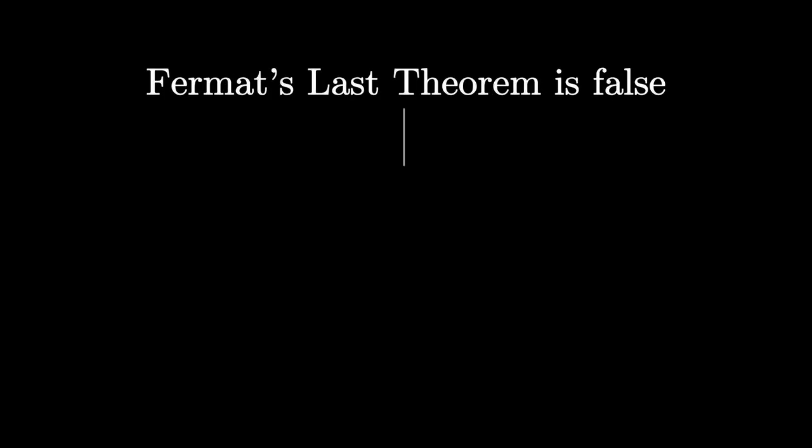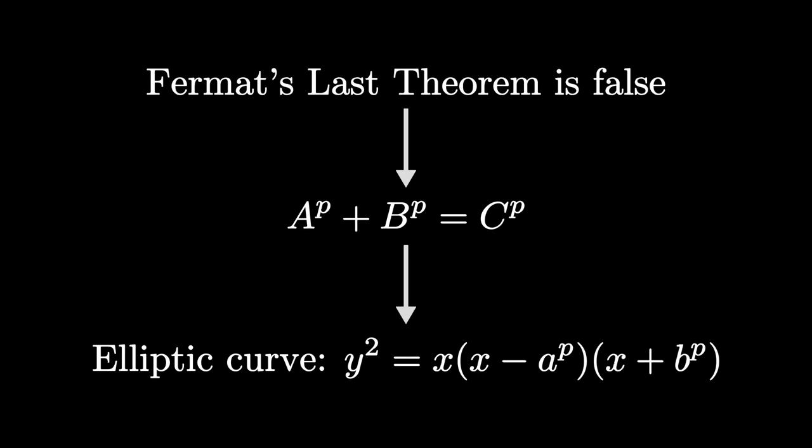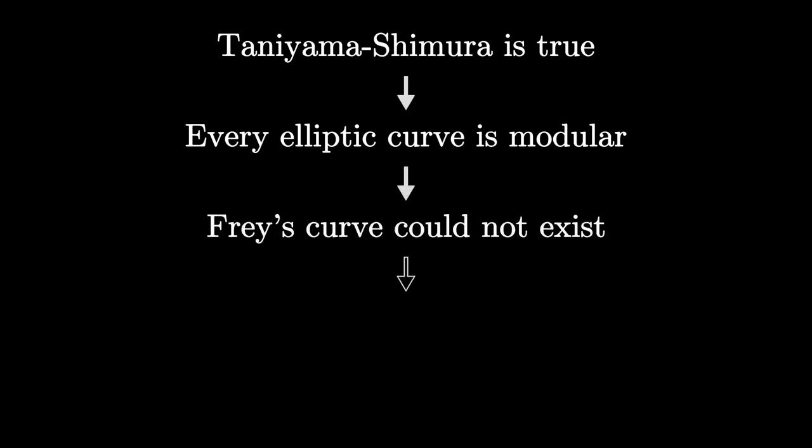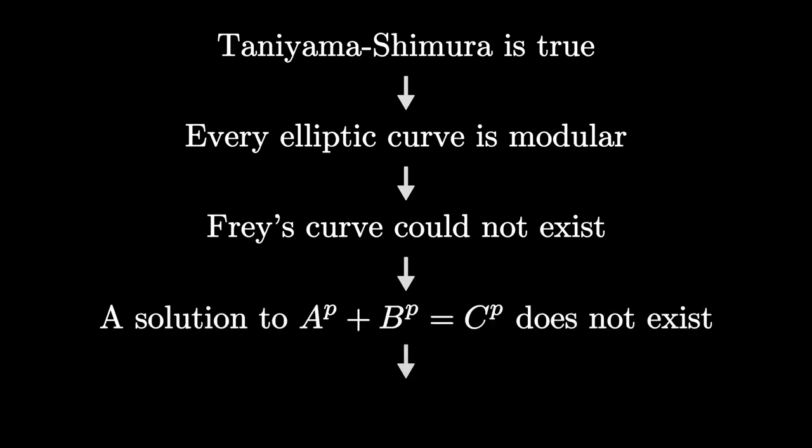Now, Taniyama and Shimura conjectured that there was a special connection between elliptic curves and modular forms. In the case of Fermat's Last Theorem, a mathematician named Gerhard Frey showed that if Fermat's Last Theorem was false, such that there exists some solution a to the p plus b to the p equals c to the p for positive integers a, b, c, and p greater than 2, then such a solution could be rewritten as an elliptic curve. Frey then conjectured that such an elliptic curve would violate the connection conjectured by Taniyama-Shimura that every elliptic curve is modular. The mathematician Ken Ribet proved that indeed Frey's elliptic equation was not modular. So if Taniyama-Shimura was indeed true, that every elliptic curve was modular, then Frey's elliptic equation could not exist, meaning that a solution to a to the p plus b to the p equals c to the p does not exist, thus proving Fermat's Last Theorem. Indeed, the theorem conjectured by these two Japanese mathematicians was now connected with one of the most important unsolved conjectures of all time.